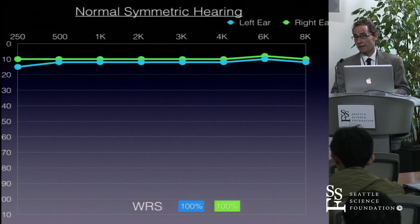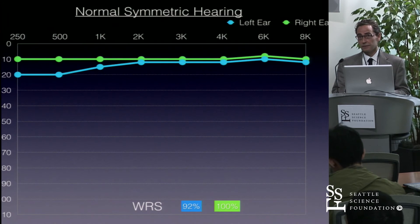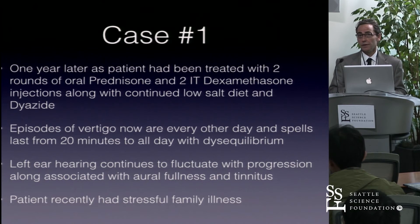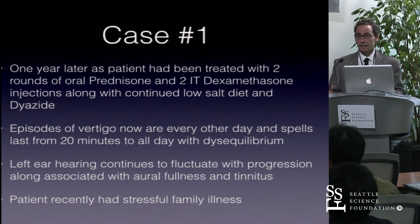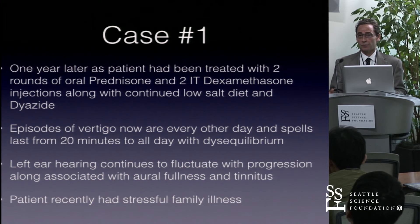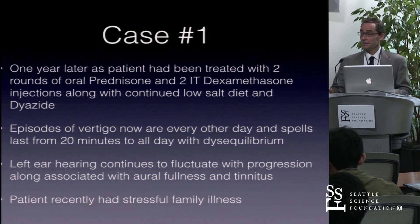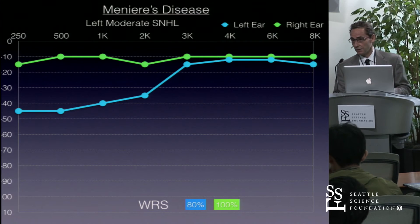In this patient, his hearing responded with improvement. The patient continued to cycle with fluctuating hearing loss over several months with relatively good word recognition score. One year later, the patient had been treated with two rounds of oral prednisone and two treatments of intratympanic dexamethasone, along with continued low-salt diet and Dyazide. Episodes of vertigo were now every other day, lasting 20 minutes to all day with disequilibrium. Left ear hearing continued to fluctuate with progression, along with aural fullness and tinnitus. The patient also had a recent family illness and became more symptomatic.